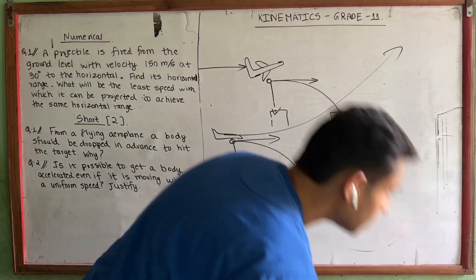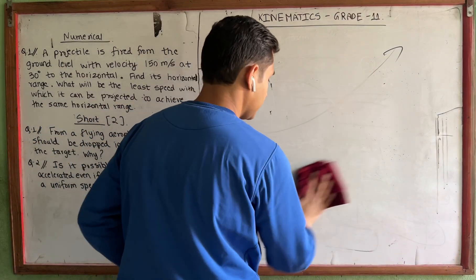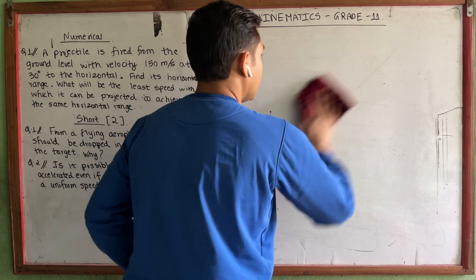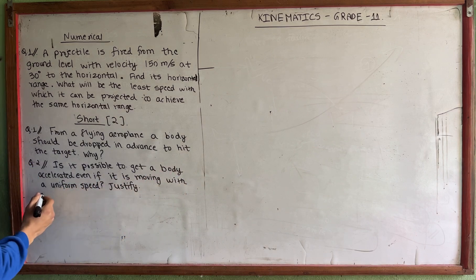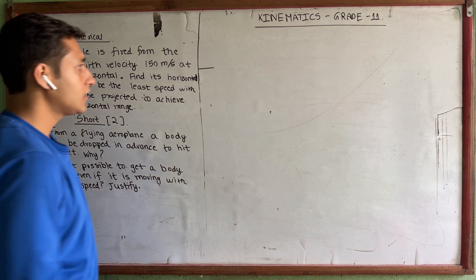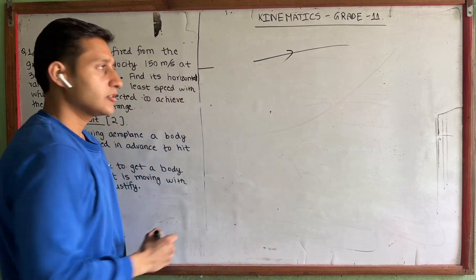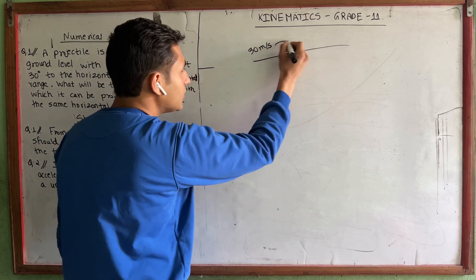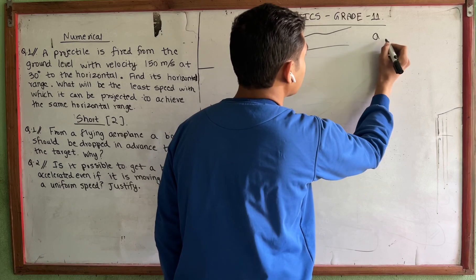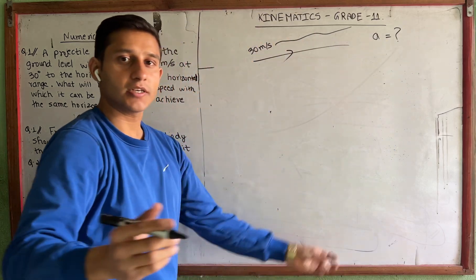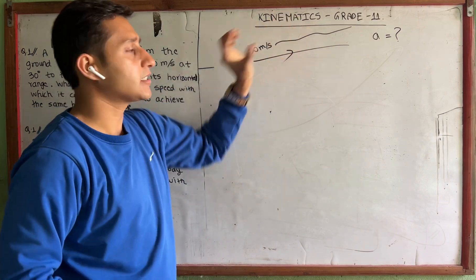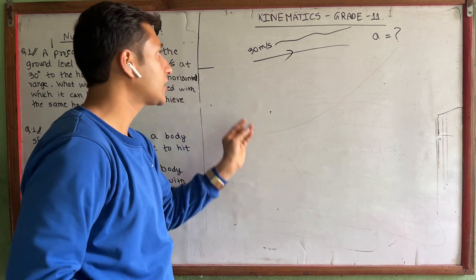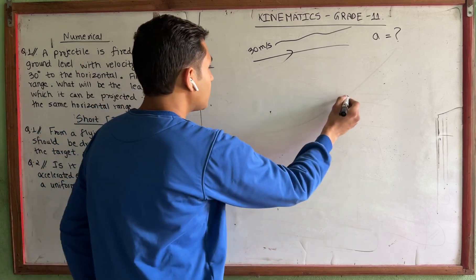So this is another question: is it possible to get a body accelerated even if it is moving with a uniform speed? Justify. This is another one. So this is within a distance, and this one is moving.